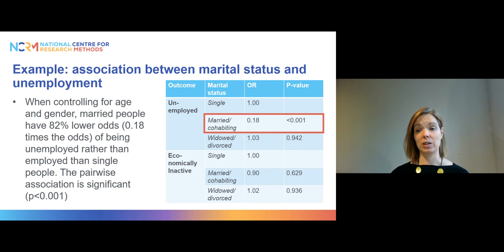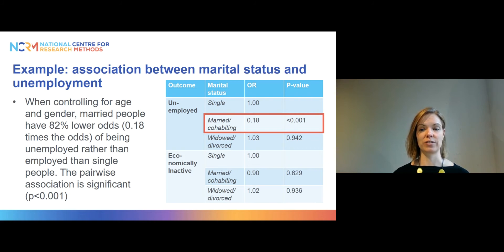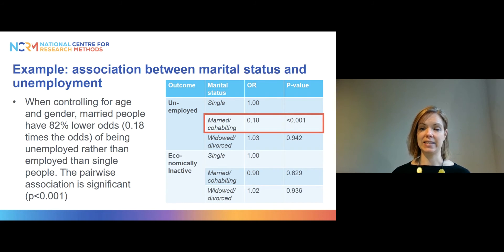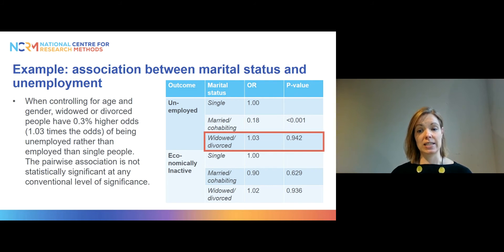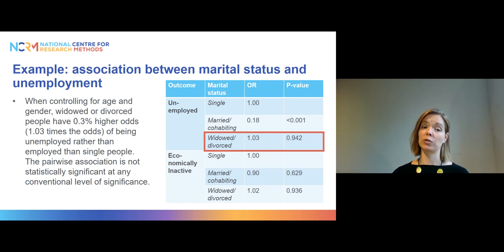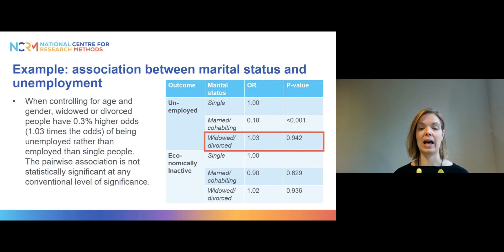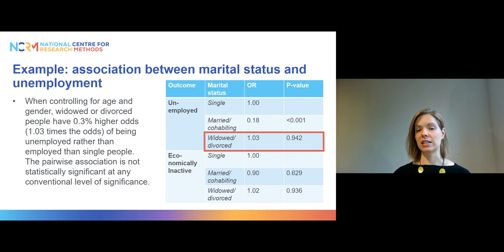You may want to comment on that p-value as well as the p-value from the likelihood ratio test, which tests marital status as a whole. Since we have a dummy variable and are conducting multinomial regression, it can get complicated with multiple comparisons, so you might want to calculate predicted probabilities instead to make interpretation easier. For the widowed or divorced group in the unemployed equation, when we control for age and gender, widowed or divorced people had about 0.3% higher odds of being unemployed rather than employed compared to single people. However, this effect is very small and the pairwise association is not statistically significant.